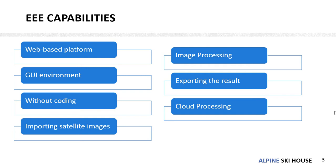In the main Google Earth Engine platform, you need to code and know programming languages such as Java and Python. But in Google Earth Engine Explorer, there is no need to know coding languages. You can work with it like a graphical user interface program, and you can import and export satellite images, apply filters, masks, and calculate spectral indices.